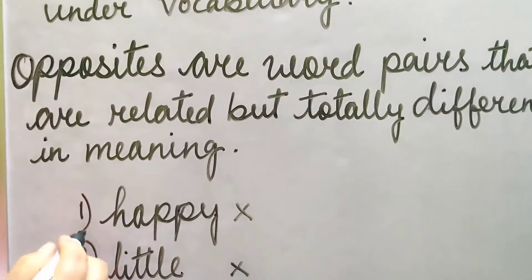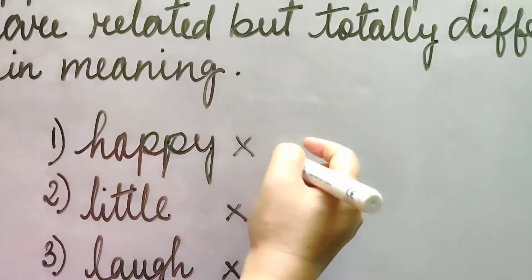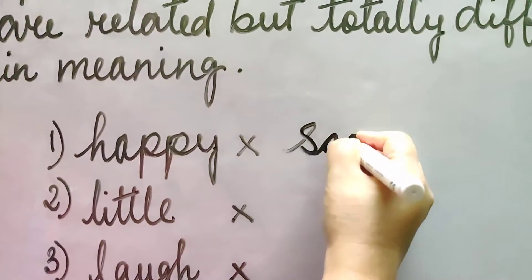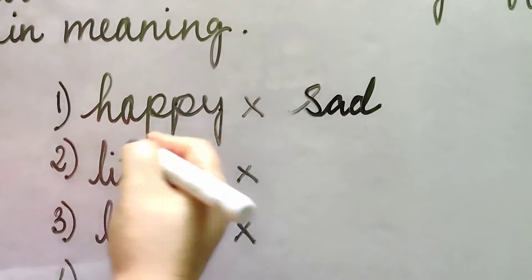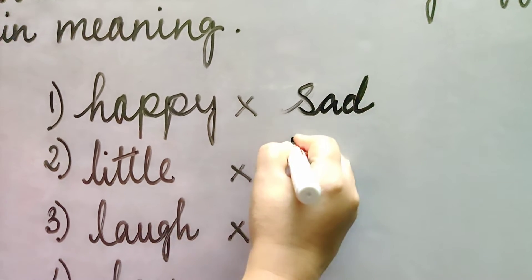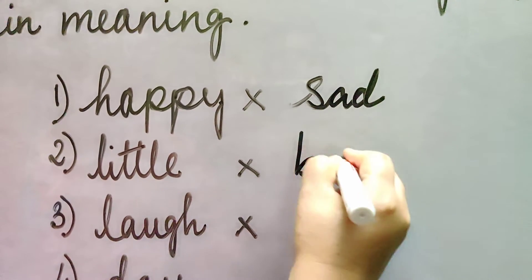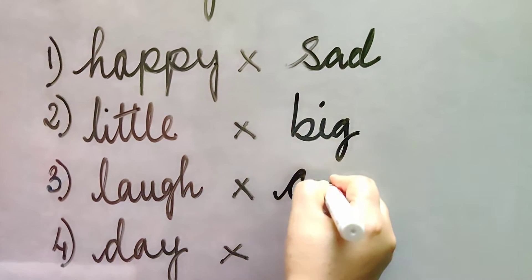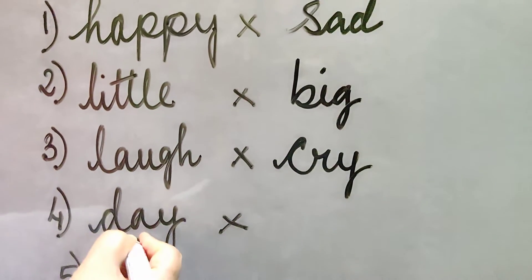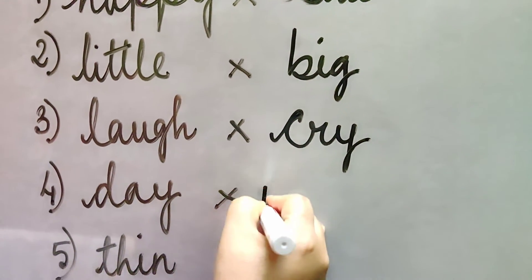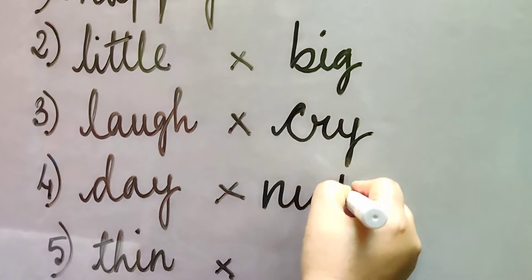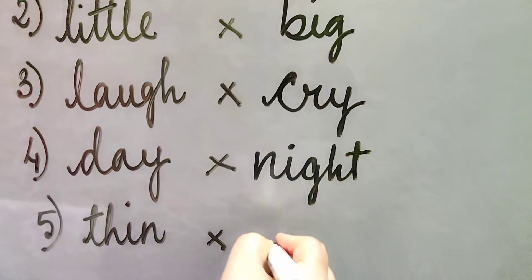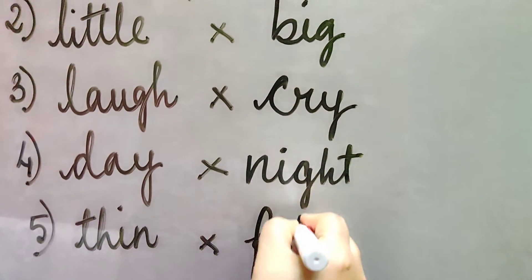Let us do it. Opposite of happy: sad — S-A-D. Opposite of little: big — B-I-G. Opposite of laugh: cry — C-R-Y. Opposite of day: night — N-I-G-H-T. Opposite of thin: fat.